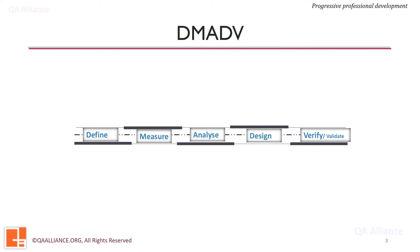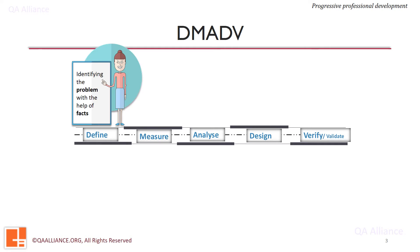Let us take an example to understand this framework. Alex the carpenter wants a revamped system for performance management of his employees, as Mr. John has suggested that incremental improvement in the existing system is not possible. In the Define phase, a problem statement was established: the employees are not getting constant feedback and improvement opportunities cannot be identified timely. Then the team created a goal statement: to implement a comprehensive, well-aligned and consistent performance management system.